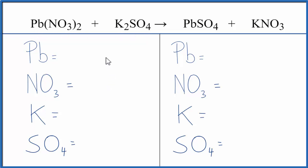Let's count the atoms up on each side of the equation. We have one lead, and then this nitrate, this NO3 here, it's a polyatomic ion. We have one here, and it stays together in the chemical reaction.